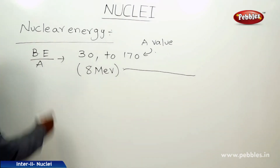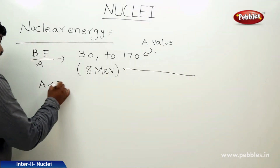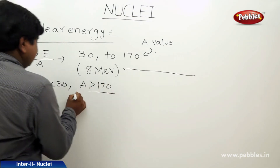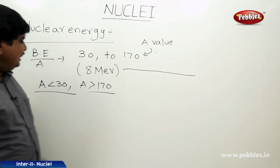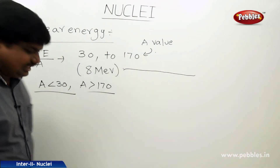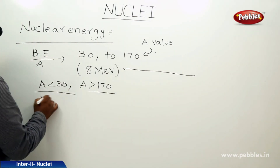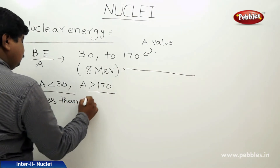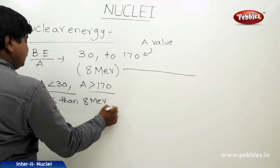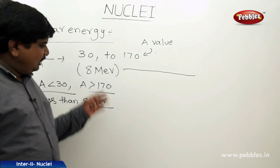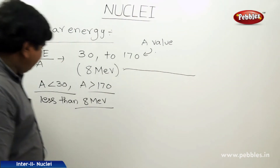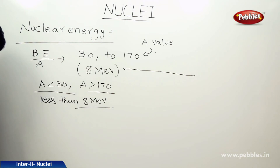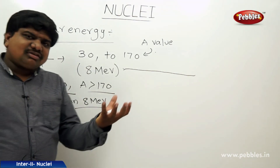Nuclides with mass numbers less than 30, or greater than 170, have a lower binding energy per nucleon — less than 8 MeV, for example 7.7 or 7.2. This means those nuclides are not strongly bounded; they are loosely bounded.